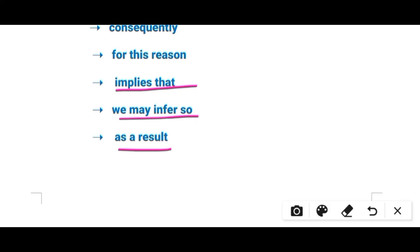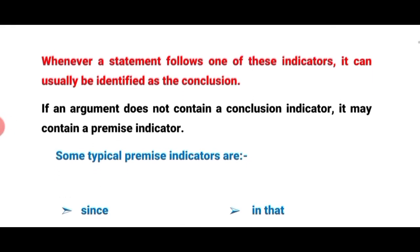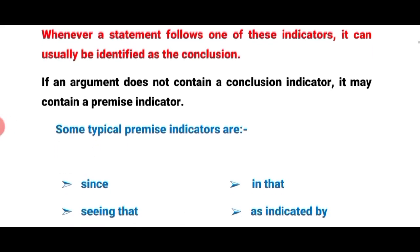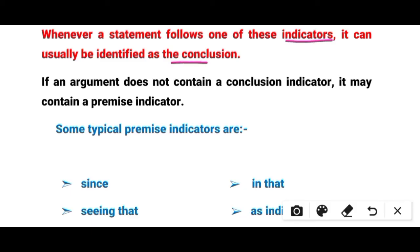If you are looking at some arguments carefully and some statements are followed by these special indicators, you may conclude that that statement is going to be the conclusion in the argument. Whenever a statement follows one of these indicators, it can usually be identified as the conclusion.